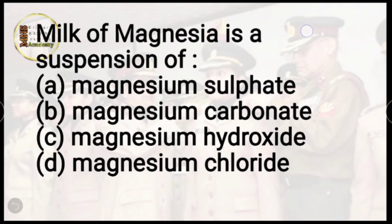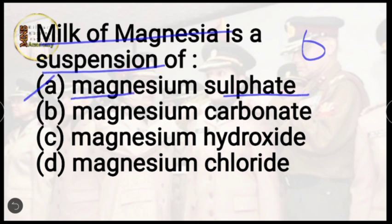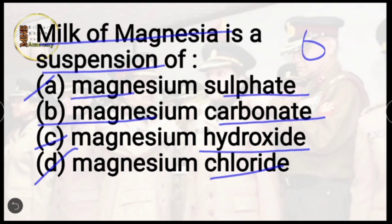Question number 6: milk of magnesia is a suspension of which of the following? Options are magnesium sulfate, magnesium carbonate, magnesium hydroxide, or magnesium chloride. The correct answer is option C, magnesium hydroxide.